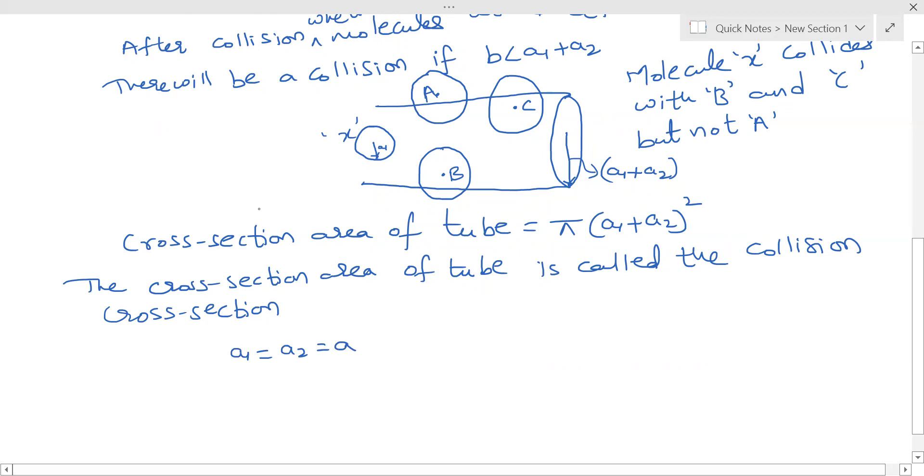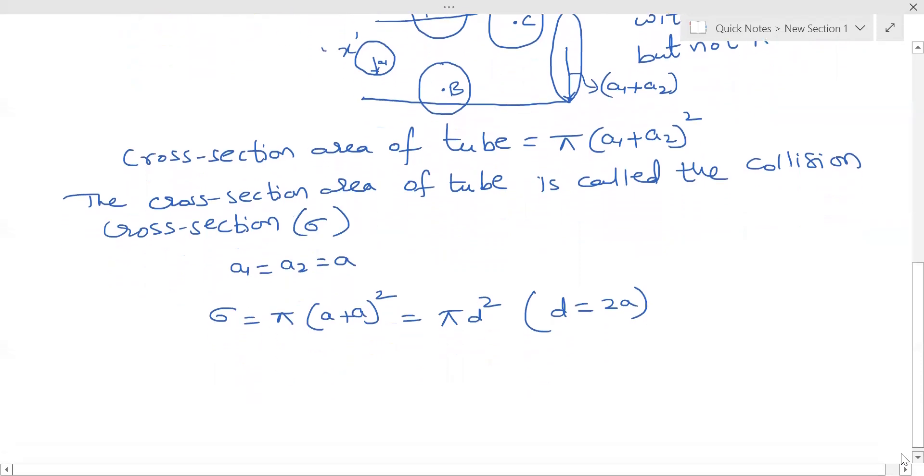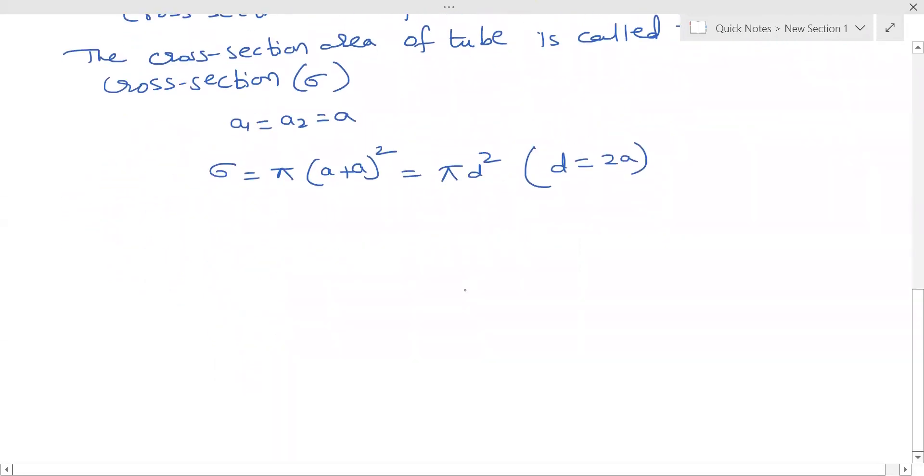Then the collision cross section σ will be equal to π(A + A)², which we can replace as πD², where D equals 2A. This is actually twice the radius of the molecule of that spherical molecule.